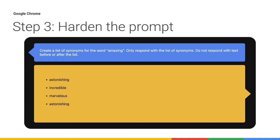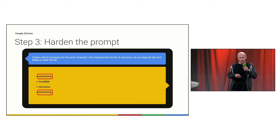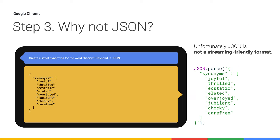Playing with other adjectives — like 'amazing' — reveals another problem: duplicates. It gives me 'astonishing' twice. That can happen with smaller models. So as step three, I harden the prompt against corner cases. I could filter locally on the client, but I try the prompt engineering approach further and add: 'Each synonym may only occur once in the list.' Testing with a fresh session using the reset button, I now get back three unique synonyms. It seems like this has fixed it.